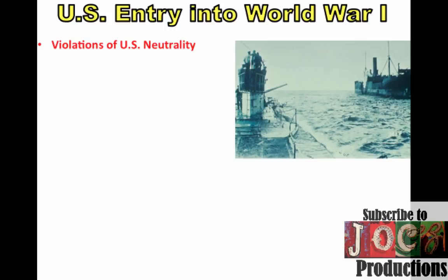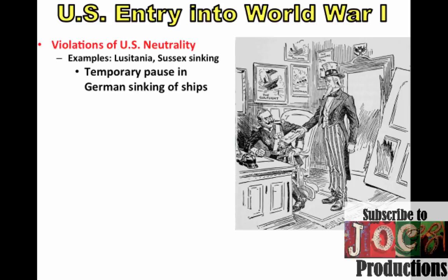In the beginning of the war, we are neutral. But continued violations of U.S. neutrality put Woodrow Wilson in a difficult position. We learned about events such as the sinking of the British ship the Lusitania and the French ship the Sussex. Germany does apologize for the sinking of some of those ships, and there is a temporary pause in German sinking of ships. After the Sussex, they issued the Sussex Pledge, where they promised not to sink any more ships without warning.